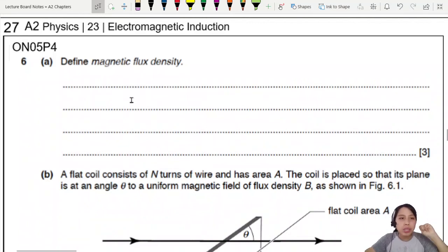Let's look at this old question, O and O 5, paper 4, question 6. Define magnetic flux density. By now, hopefully you've memorized already.